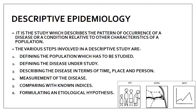Descriptive epidemiology, as the name says, is about describing a disease in full — its introduction, incidence, clinical features, etiology, and pathogenesis. When you want to do descriptive epidemiology, various steps are involved. The first step is defining the population to be studied — for example, if you're studying a disease in a particular area, that area's population becomes your study population.